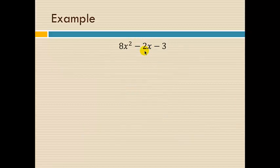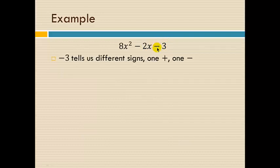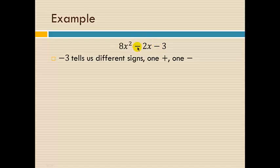One last example looking at signs. Again, looking at the last term, we see it's negative. That tells us we have different signs. One is positive, one is negative. But for this problem, because the middle term is negative, that tells us the bigger product is negative.